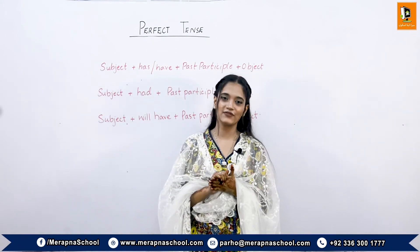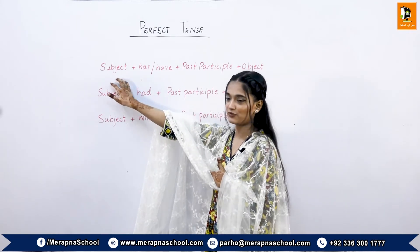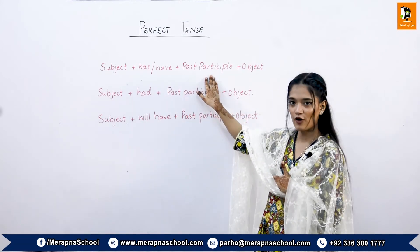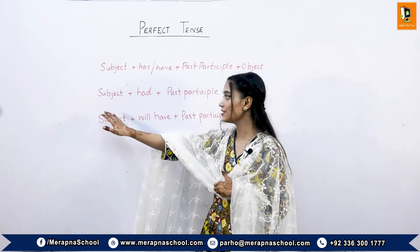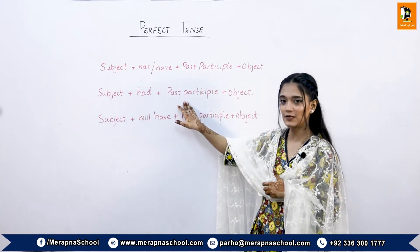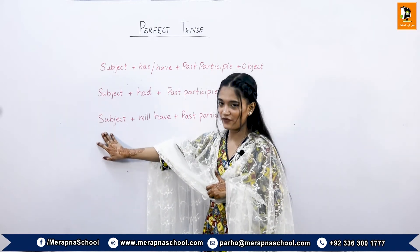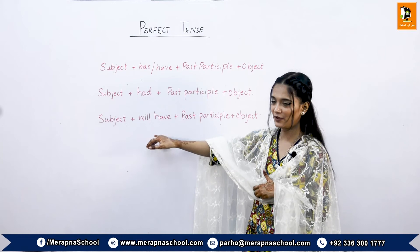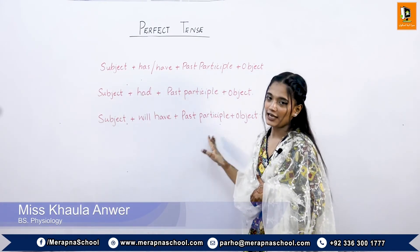Now I will repeat the formation of the sentences for the present perfect tense, past perfect tense, and future perfect tense. For the present perfect tense: subject plus has or have as a helping verb, then past participle form of the verb, then the object or rest of the sentence. For the past perfect tense: subject plus had, plus past participle form of the verb, then the object. For the future perfect tense: subject plus will have as a helping verb, then the past participle form of the verb and then the object.